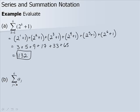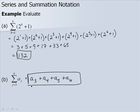In part b, we have a sub 3 as our starting term since j is 3, going up to a sub 4, a sub 5, and a sub 6. Since we don't have any other information, this is all we can do.